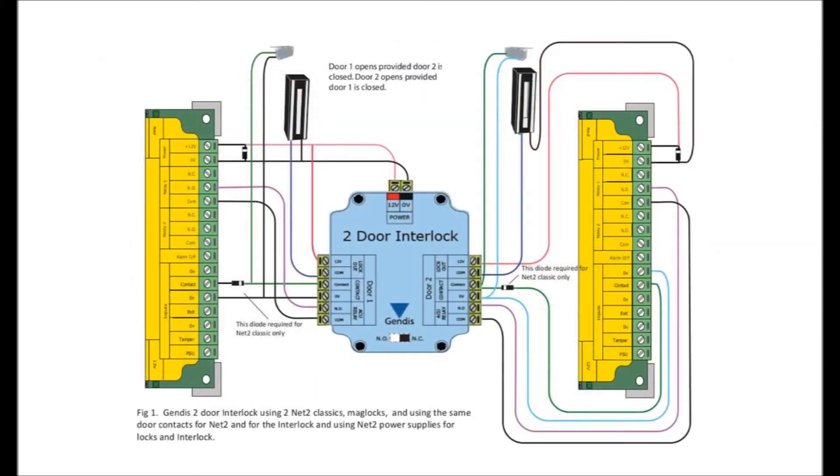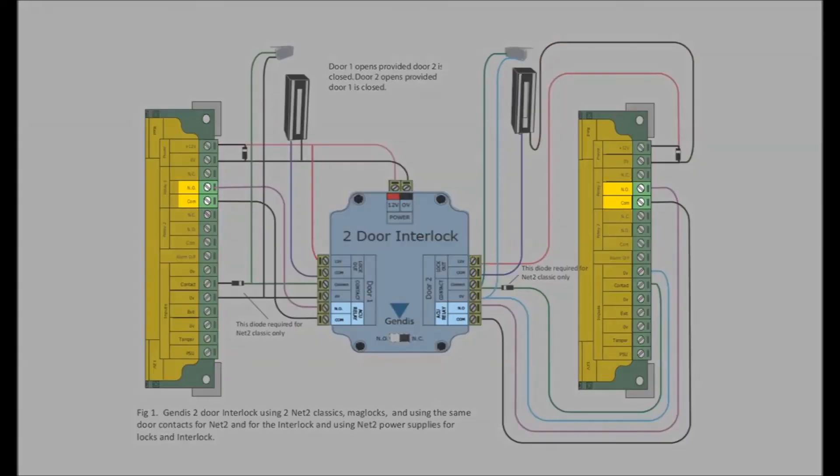When connecting the interlock device to a pair of Net 2 ACUs, you will need to connect the normally open and comm from the interlock to the ACU relay. So if you are using maglocks, don't connect the normally closed and comm from Net 2 to the interlock inputs. You should also place two diodes, one across each lock to protect the relay coil from any reverse electromotive force.